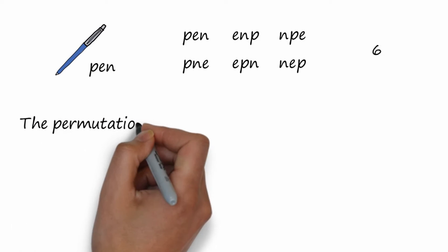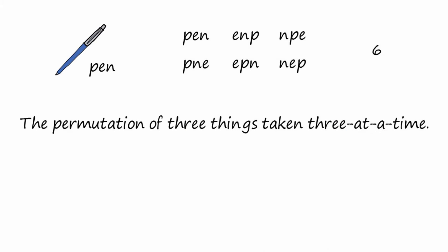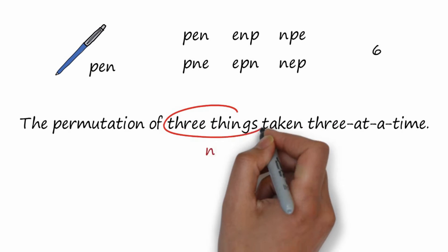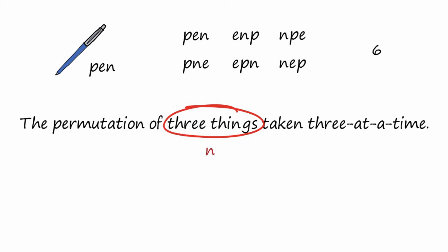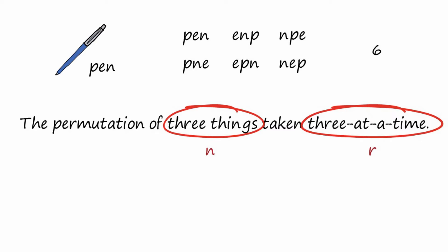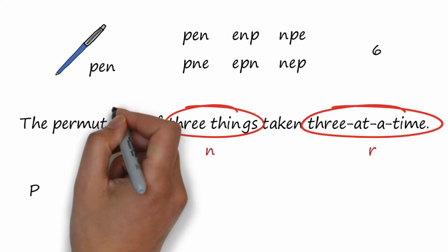This is called the permutation of three things taken three at a time. We use the letter N to mean three things, the letters in the word pen. We use the letter R to say three at a time. We want to make words with three letters in them. We use the letter P for permutation.